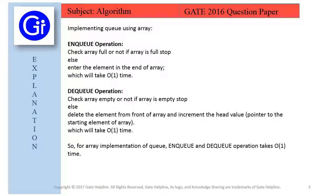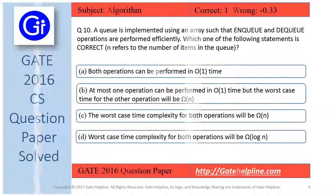So for array implementation of queue, enqueue and dequeue operations take big O of 1 time. So friends, as per our explanation, answer to this question is option (a), that is both operations can be performed in big O of 1 time.